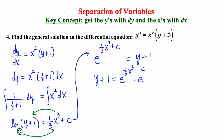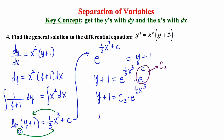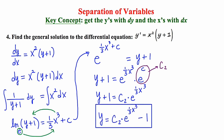This writes the power, which is a sum, as the product of two things with base e, as we talked about on the last slide. This e to the c is just a constant, so instead of writing it in this complicated way, let's just write it as c sub two. So now we have y plus one equals c sub two times e to the one third x cubed. I'll conclude by subtracting one. And here's our answer to number four, implementing a lot of the newer ideas from the last slide.